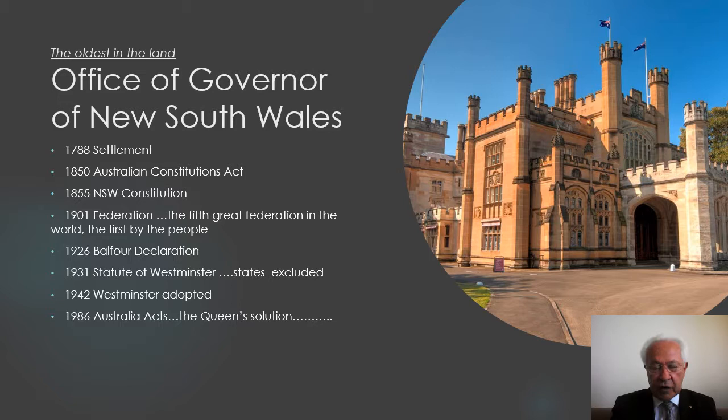And under these, the powers of the Crown in each state are exercised by the Governor, except when the Queen is present in the state, and except in relation to the appointment and the removal of Governors, which is done by the Queen as Queen of Australia.